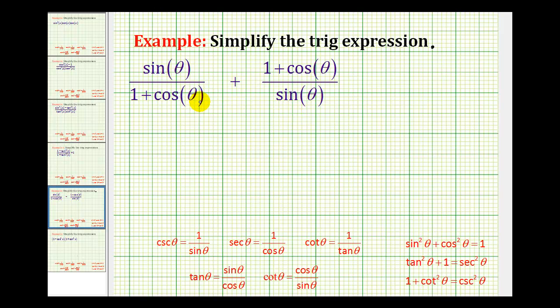The only thing we'll have to do is try to add these two fractions together. Remember to add fractions we have to have a common denominator. So our common denominator is going to have a factor of one plus cosine theta and a factor of sine theta.